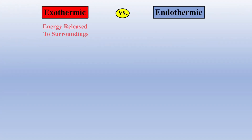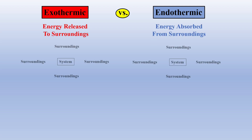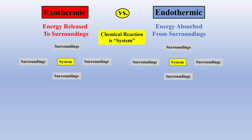Simply stated, an exothermic reaction releases energy to the surroundings, and an endothermic reaction takes energy in from the surroundings. This is easy to imagine when we define our reaction as the system, and everything else as the surroundings.